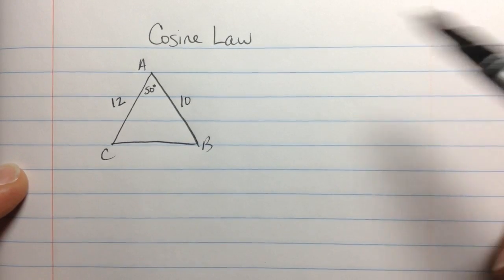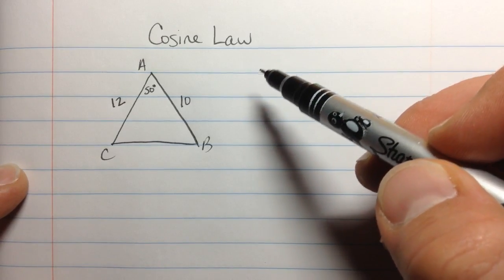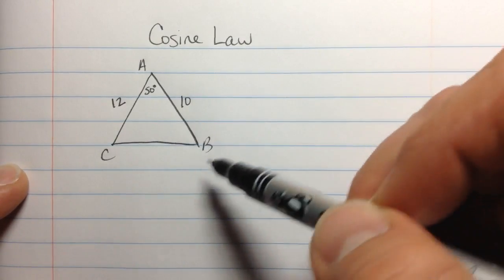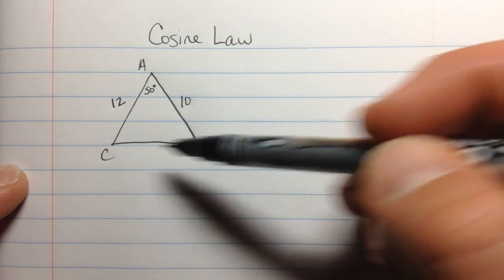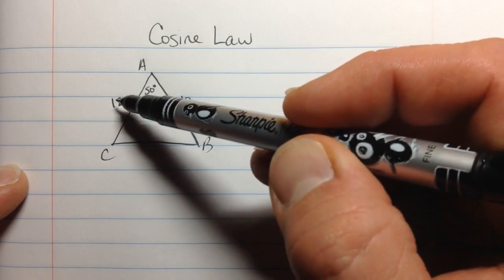Hi, I'm Brandon Grasley. I'm a high school math teacher. Let's talk about using the cosine law to solve for missing parts of triangles. Here's one of the cases for which the cosine law will work. I've got a triangle here, ABC. I know one angle, 50 degrees, and I know two sides.